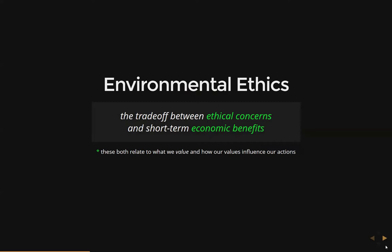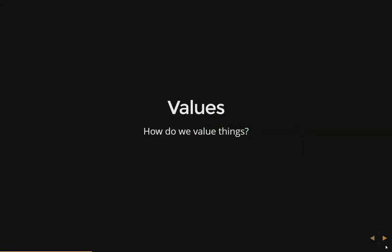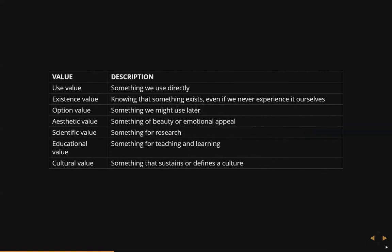We're seeing some key points in how we define ethics. These values — how do we value things? I'm challenging you right now: think of something that you value. Now let's see how we can categorize that. If it's something that you use directly, we think of that as a use value. If it's something that you know exists but maybe you'll never experience, that would be an existence value — like donating to the conservation of the rainforest. Something that you might use at a later time is an option value. Something that has beauty or emotional appeal is the aesthetic value. Something important for research has a scientific value. Something for teaching or learning has an educational value. Or something that sustains or defines our culture has a cultural value.